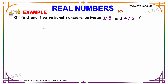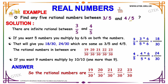The question we have here is: find any 5 rational numbers that lie between 3/5 and 4/5. Let us see the solution of how to solve this problem. As we know, there are infinite rational numbers between 3/5 and 4/5.